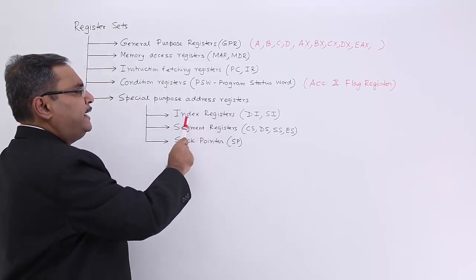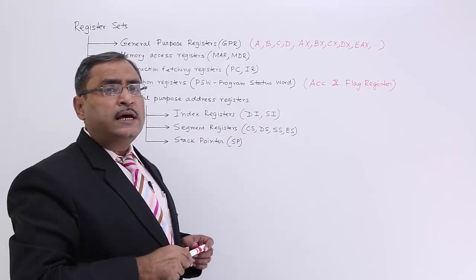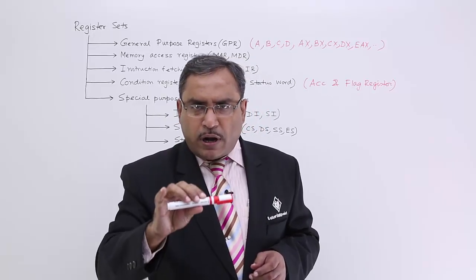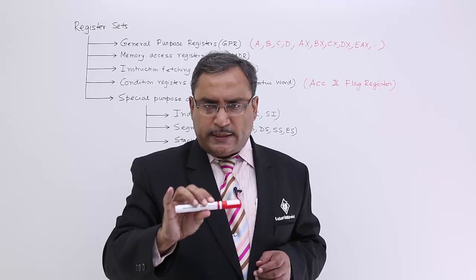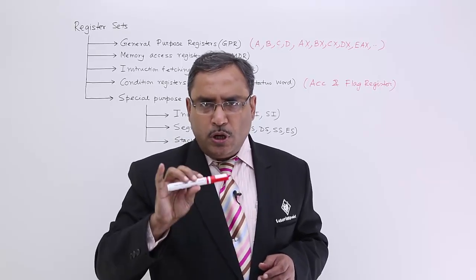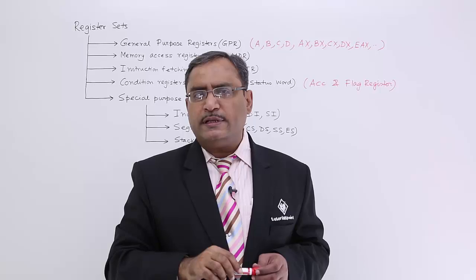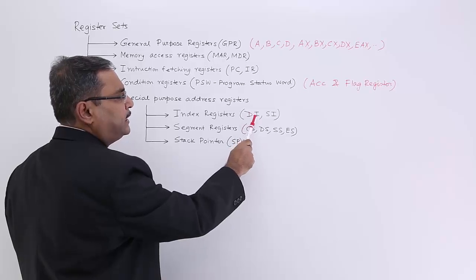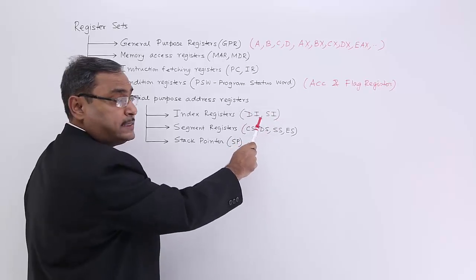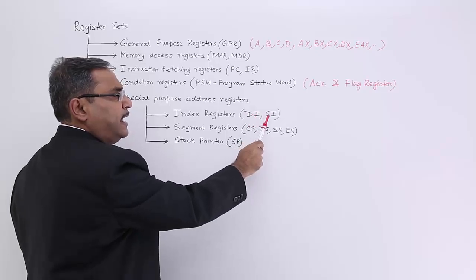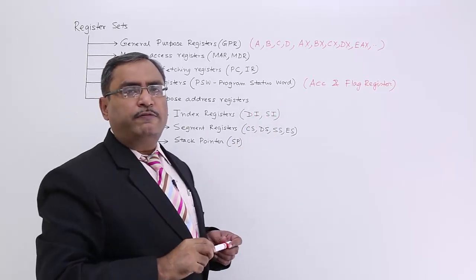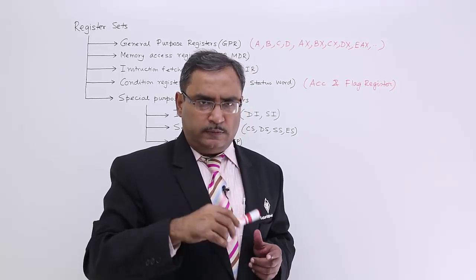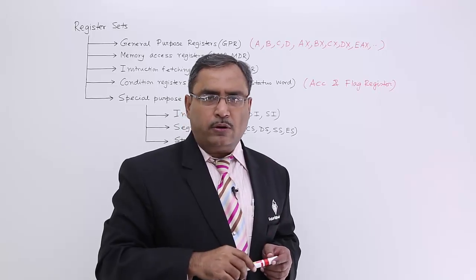Special purpose registers include index registers such as SI and DI. Index registers indicate, from a certain starting address, how far — what is the index, the offset, or the displacement — you should move to get the actual effective address or physical address. Examples are destination index (DI) and source index (SI). When you study advanced microprocessors, you will encounter these registers more extensively.